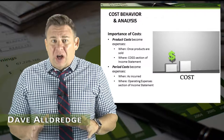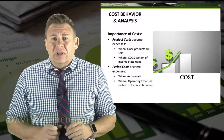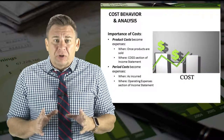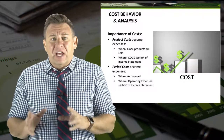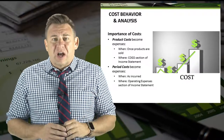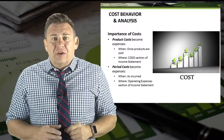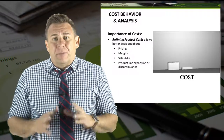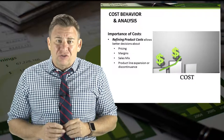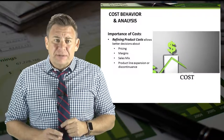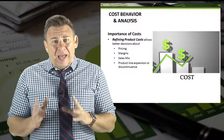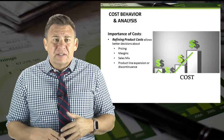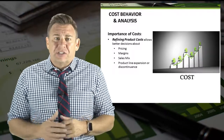So far we've learned a lot about costs and why proper classification is important. Product costs need to be classified separately from period costs because of the difference in timing of when those costs become expenses and where those expenses are reported on the income statement. We've also learned that by refining our overhead allocation, we can calculate more accurate product costs, allowing managers to make more informed decisions about pricing, margin, sales mix, and product line expansion or discontinuance.